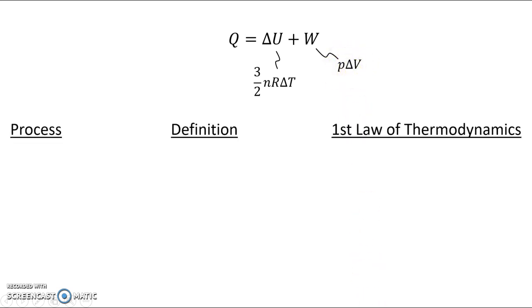The last thing I want to do is summarize all of this in a nice chart. Here is the first law of thermodynamics. We already know what causes the internal energy to change, a change in temperature. And we already know what causes work to be done, a change in volume. Although we have to be careful, this equation is only valid if the pressure is constant. When pressure changes and volume changes, we have to apply it by using the area under the graph.